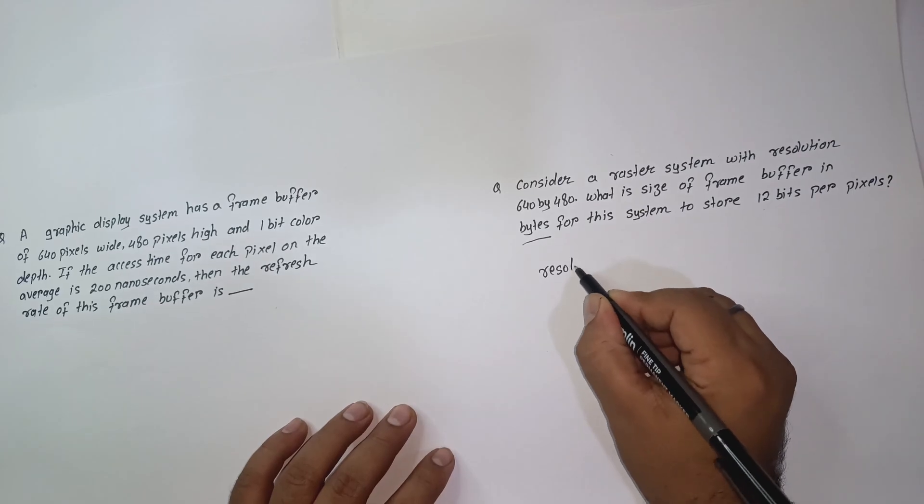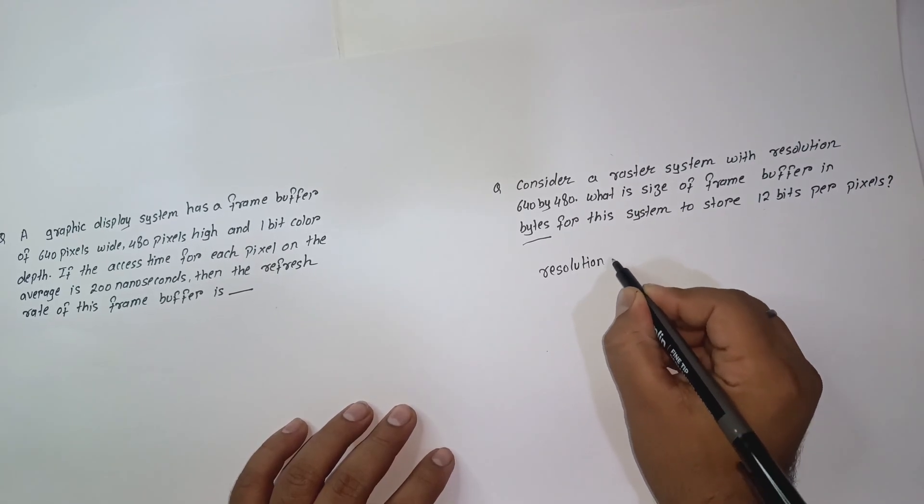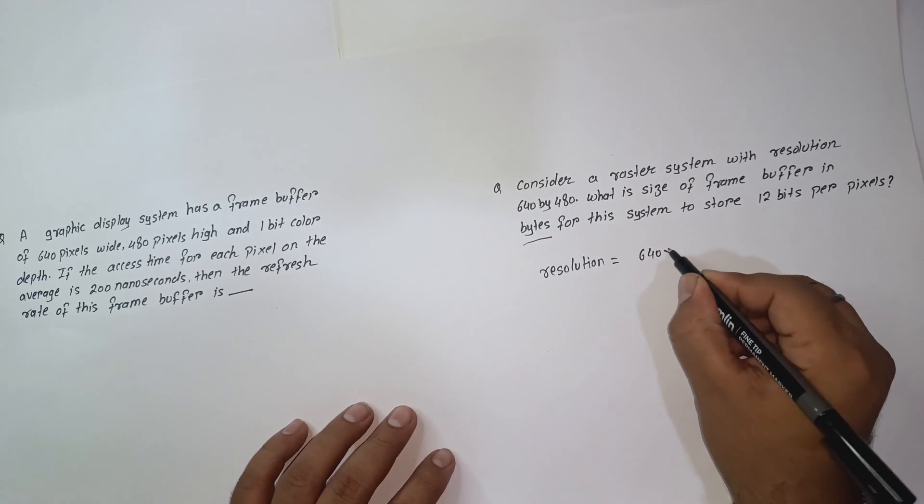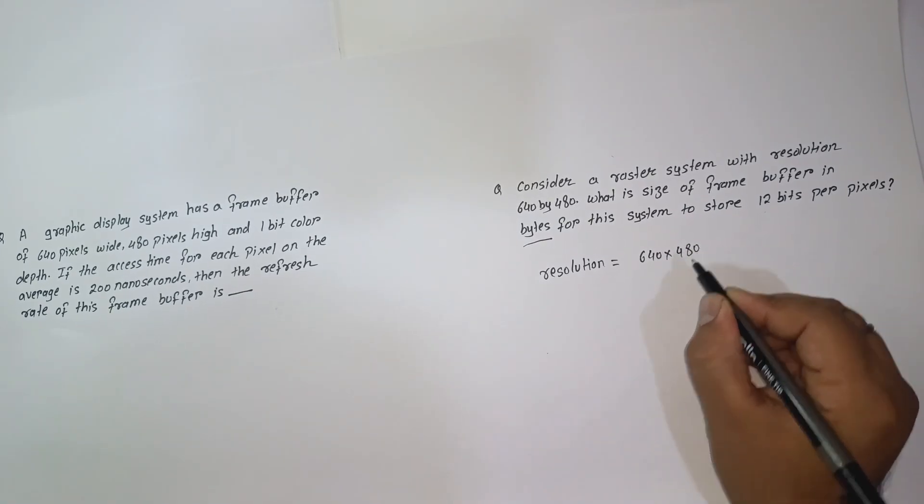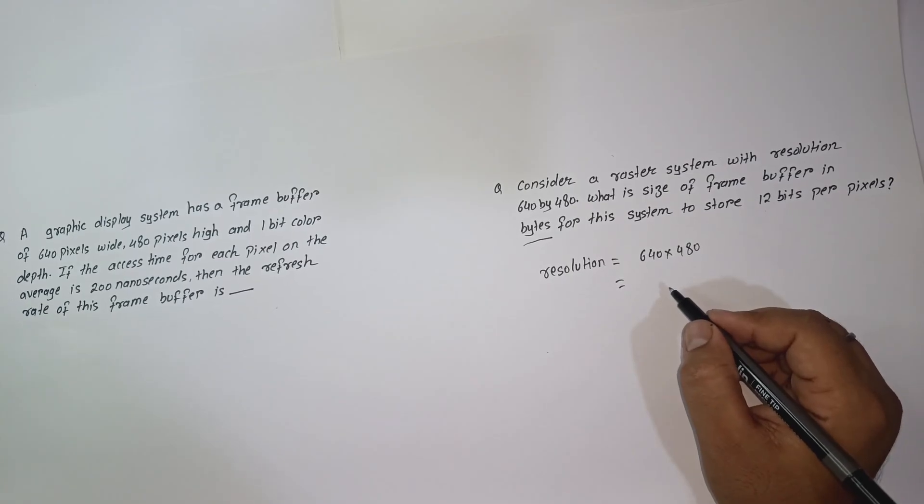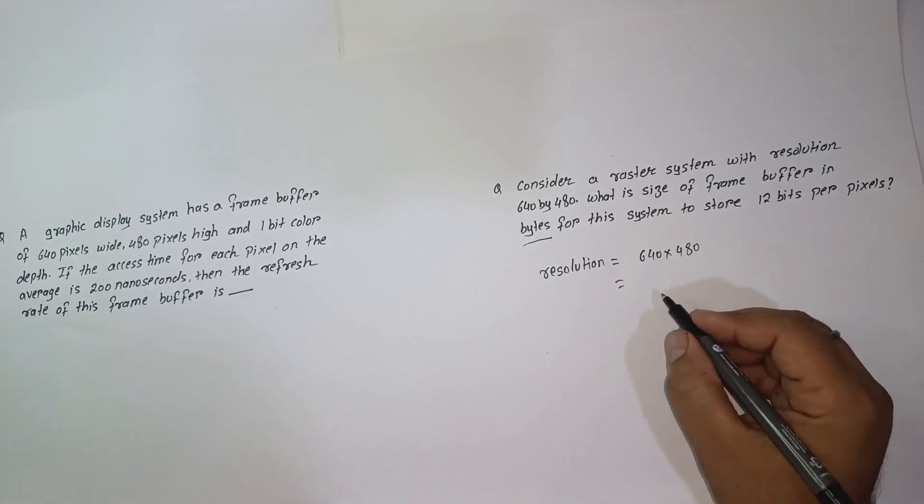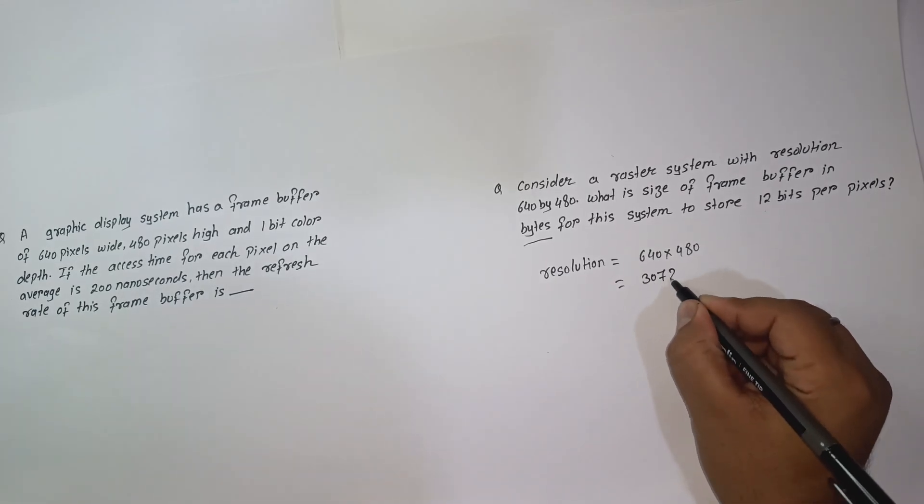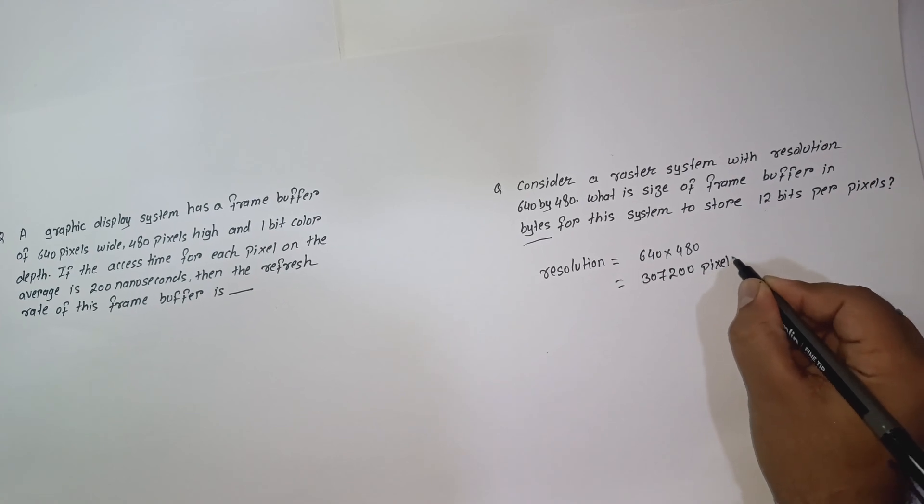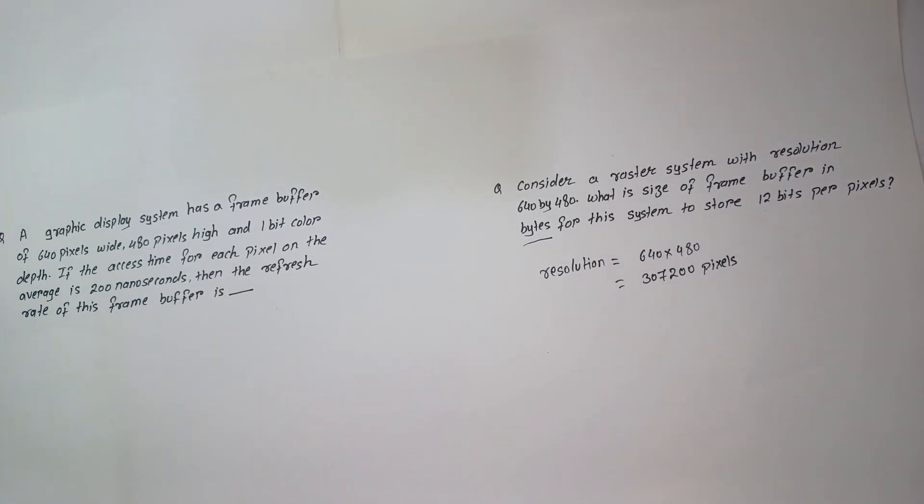Let's calculate the resolution, that is the number of pixels. So it's 640 into 480. 640 into 480 is 307,200. So the total number of pixels are 307,200.